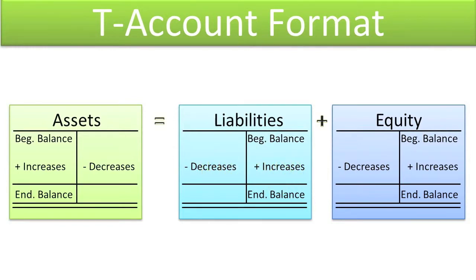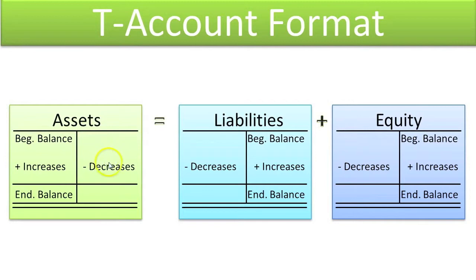Accountants have developed this method over time because it allows you to do the math a little bit faster by hand. If you put all the increases together, you can add them all up really fast, as opposed to having increase, decrease, increase, decrease all in the same column. They put the decreases on the opposite side just so you can add up all the increases together and then in one computation deduct the total of all the decreases.